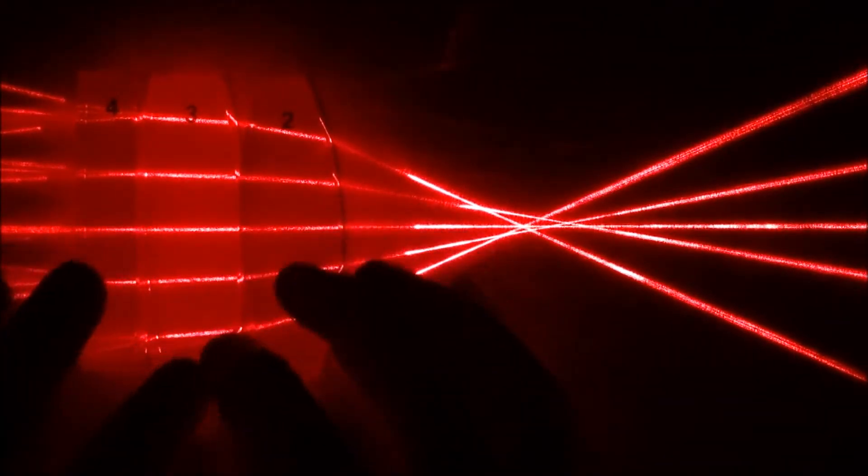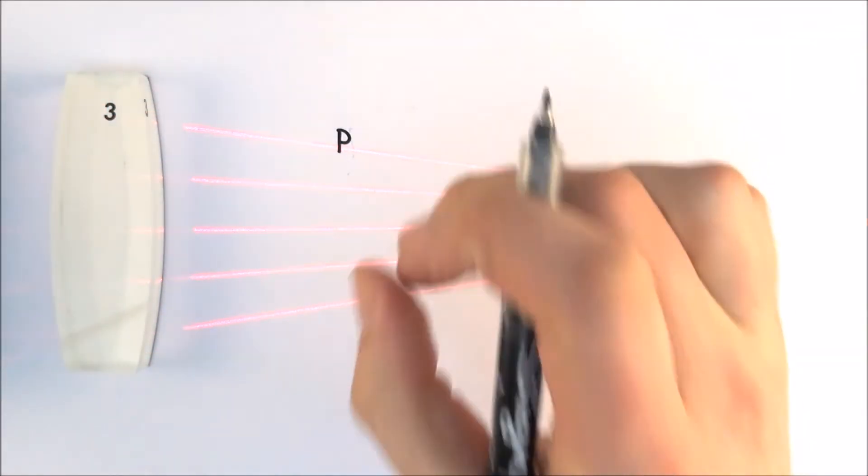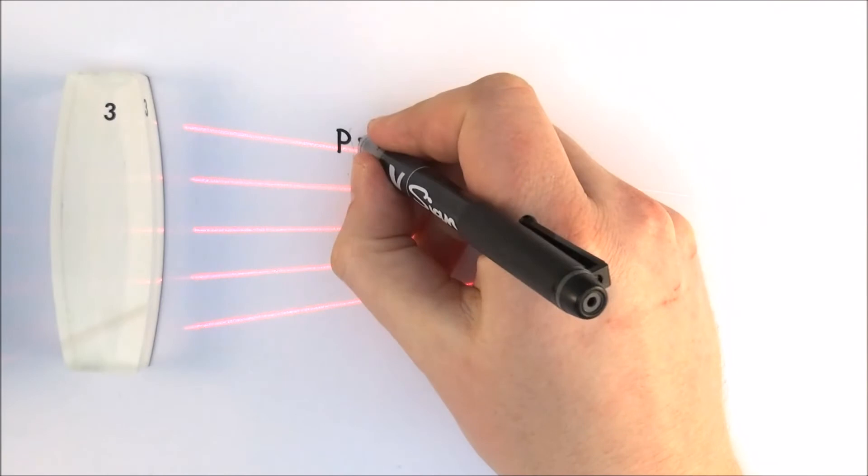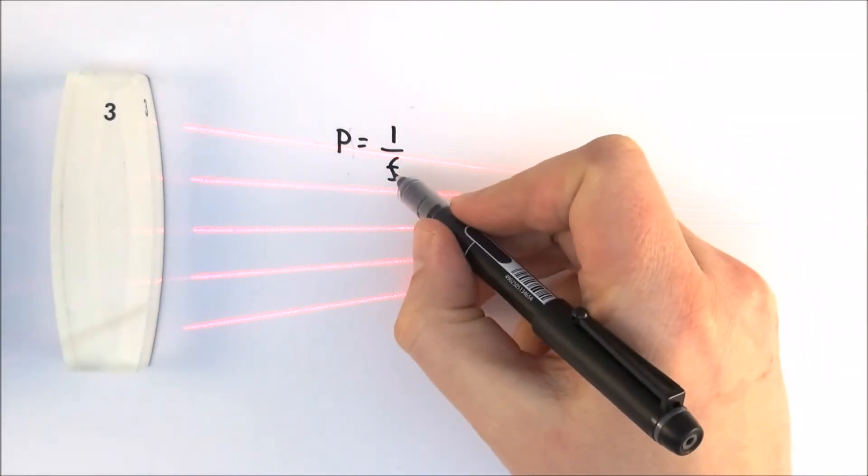When we use the symbol P, although we're talking about power, it's not in watts. The power of a lens is equal to one over the focal length. Effectively, the shorter the focal length, the more powerful the lens.